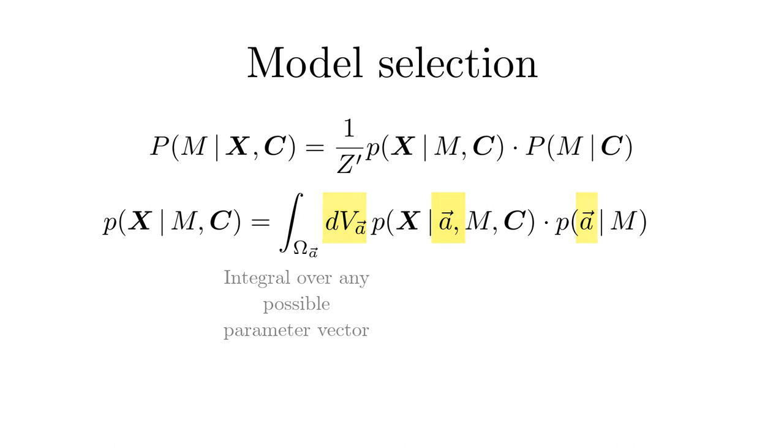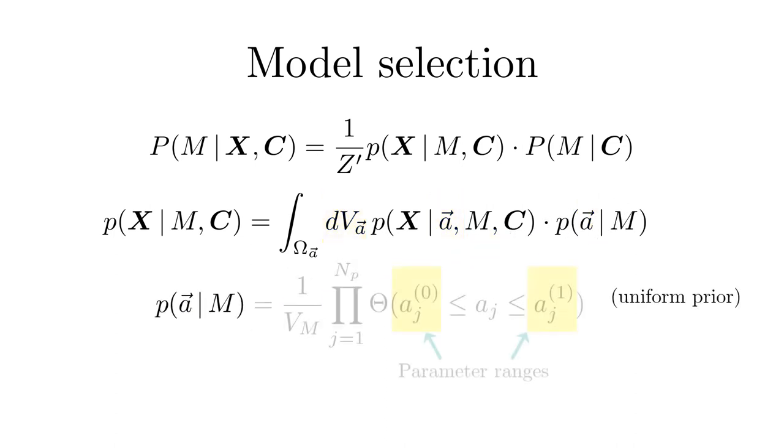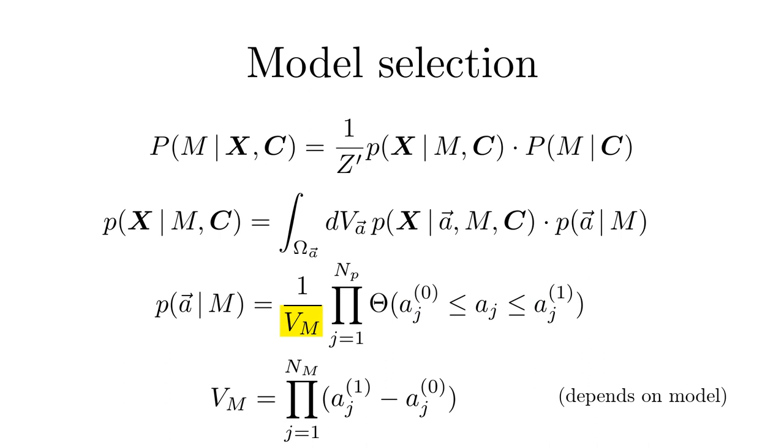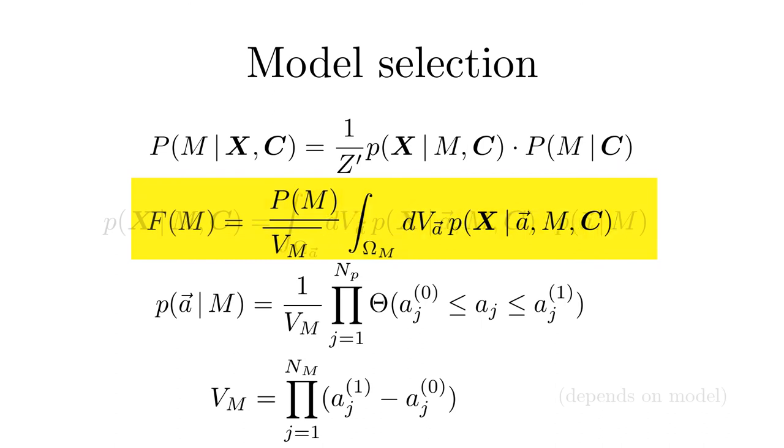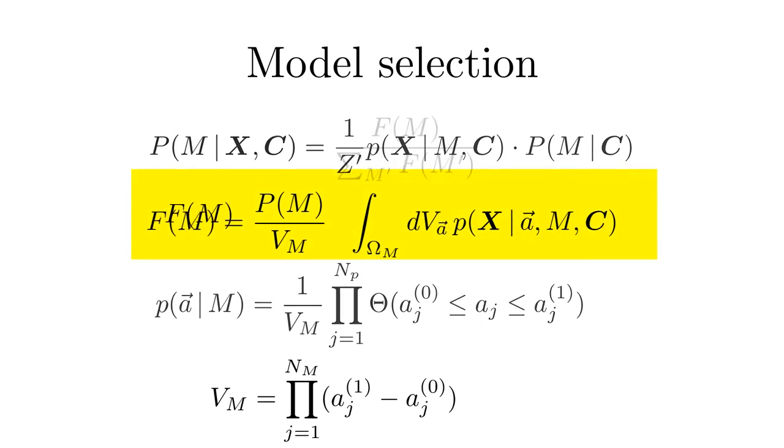As long as we do not know better, we assume a uniform prior within certain parameter ranges. Here V sub m is the prior volume that depends on the model. Then the probability for model m in the light of the data is given by the following expression. Here omega sub m is the volume in parameter space allowed by the model.